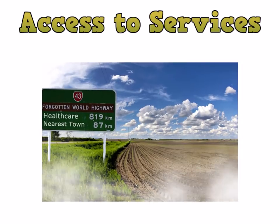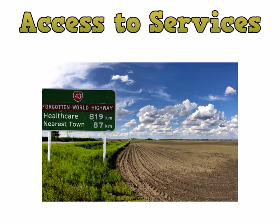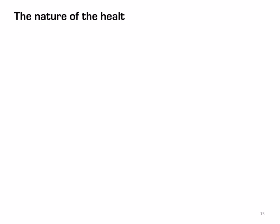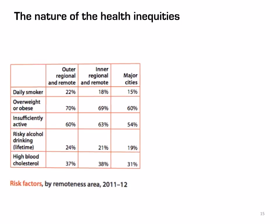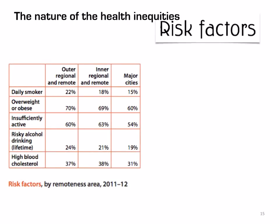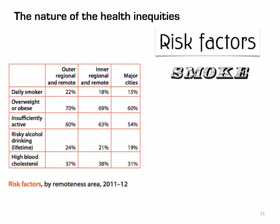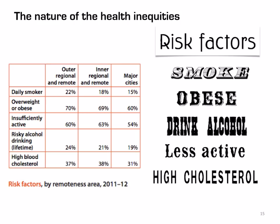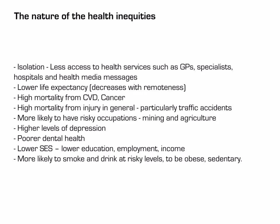Access to services is a major issue due to geographic isolation. People in rural and remote areas have less access to hospitals, specialists and doctors, and may also have less access to general health messages. The summary table shows that those in rural and remote areas are more likely to smoke, be obese, drink alcohol, be less active, have high cholesterol, and are more likely to have a risky occupation.